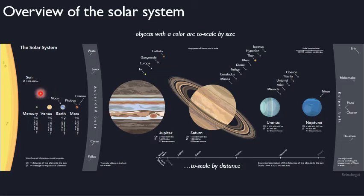What you're basically looking at are the major objects of the solar system. Any object that has a color is accurately portrayed by size, but not by distance here. So we have eight planets: Mercury, Venus, Earth, Mars - these are the terrestrial planets. We have these gaseous and icy planets, the Jovian planets: Jupiter, Saturn, Uranus, Neptune.